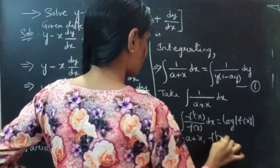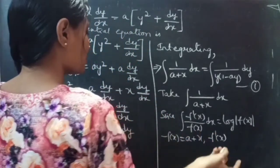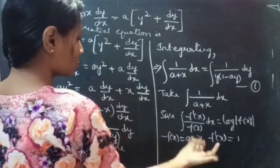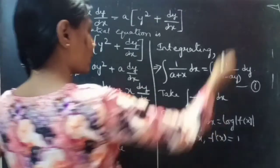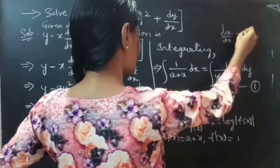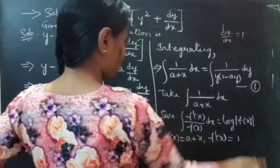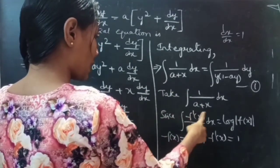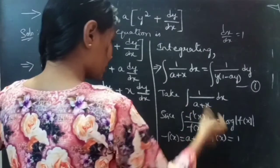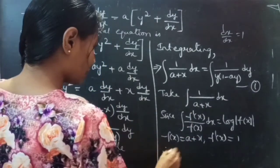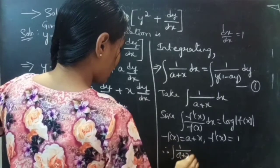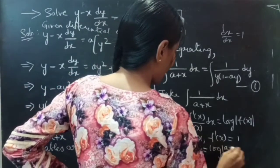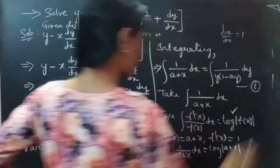Then f'(x) is the derivative of a plus x, which equals 1, since the derivative of the constant a is 0 and dx/dx is 1. So f'(x) equals 1. Therefore, using the formula, integral of 1/(a plus x) dx equals log|a plus x|.